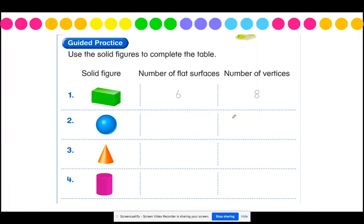Let's go into our guided practice. We're going to look at the solid figure and name the number of flat surfaces as well as vertices. The first one is done for us and it is a rectangular prism. A rectangular prism has a total of six flat surfaces, and the number of vertices, which we counted in our video, is eight — that's where they come to meet at a point.